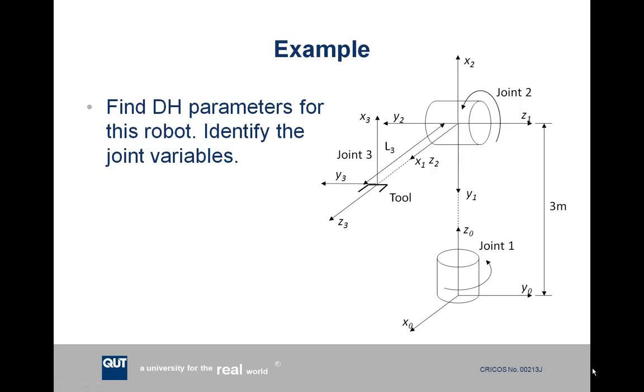For reference frame 2, we note that z2 and z1 once again share the same plane and intersect, so the direction of x2 has to be perpendicular to both z1 and z2. We have x2 pointing directly upwards, and then using the right-hand rule, we can work out that y2 has to be pointing to the left.